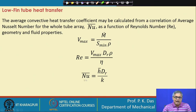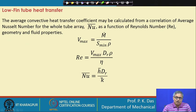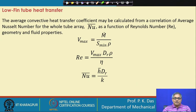The average Nusselt number Nu̅ = H̄·D_r / k, where D_r is the root (outer) diameter of the tube and k is the conductivity of the flowing gas, such as air. The same outer diameter used for the Reynolds number is used as the characteristic length for Nu̅.